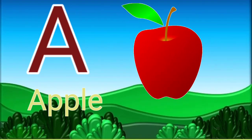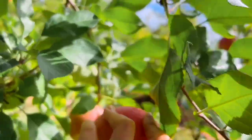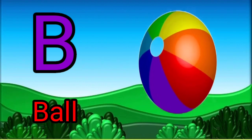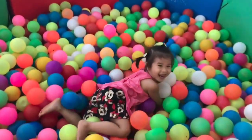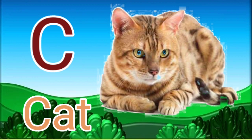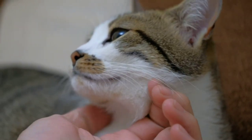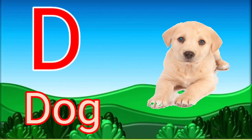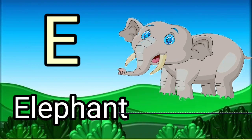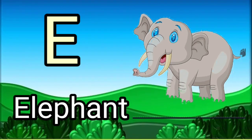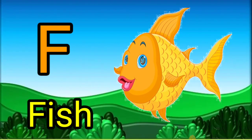A for apple. B for ball. C for cat. D for dog. E for elephant. F for fish.